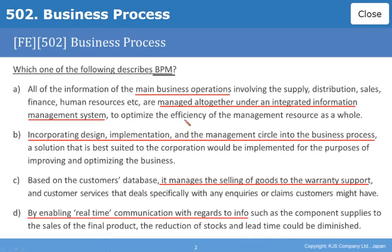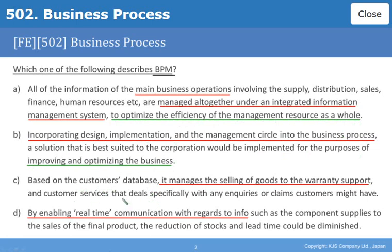So we have four options. Each one of these seems to be for a different purpose. Option A is for optimising the efficiency of a management resource as a whole. Option B is for the purposes of improving and optimising the business. Option C is to enable better customer services. And option D is to reduce the stocks and lead time.